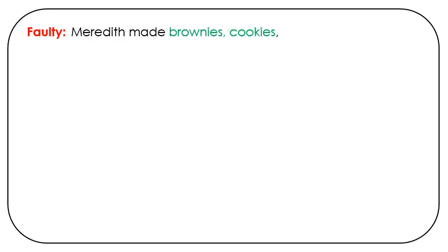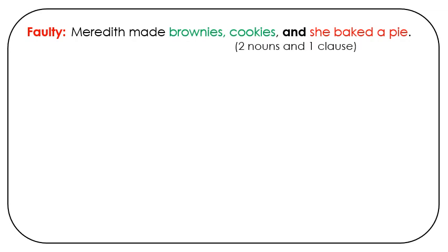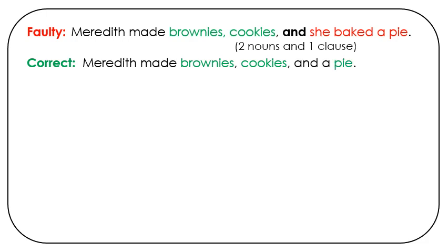Faulty: Meredith made brownies, cookies, and she baked a pie. Here we have two nouns — brownies, cookies — and then a clause: she baked a pie. The correct version would be: Meredith made brownies, cookies, and a pie. There we have three nouns.